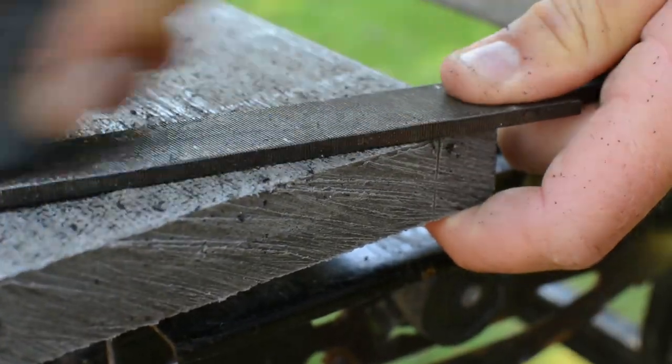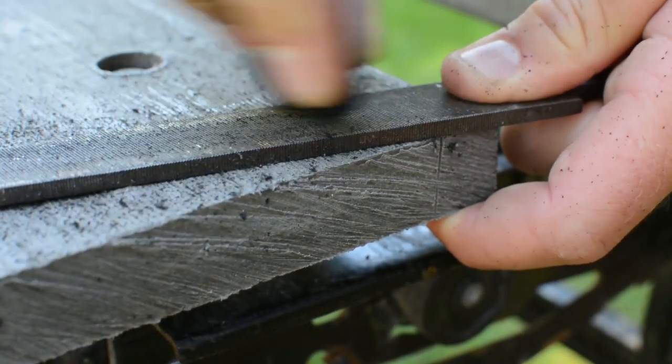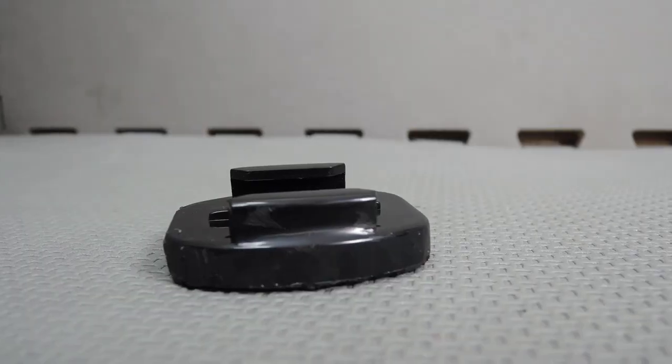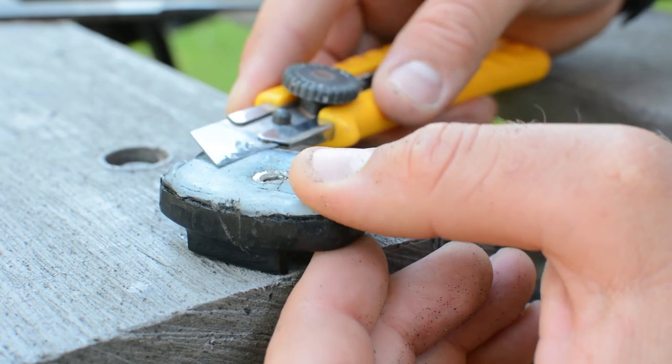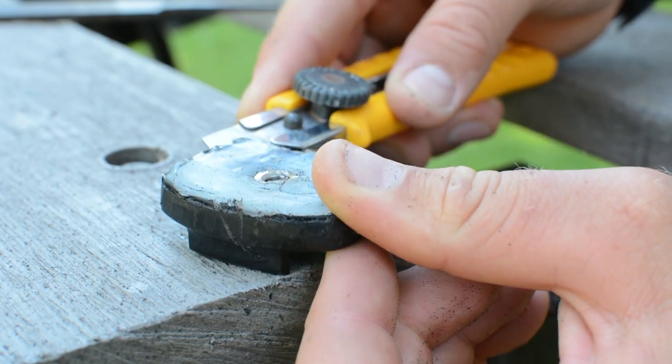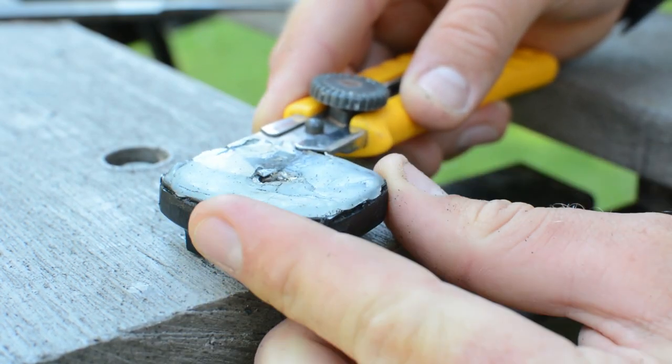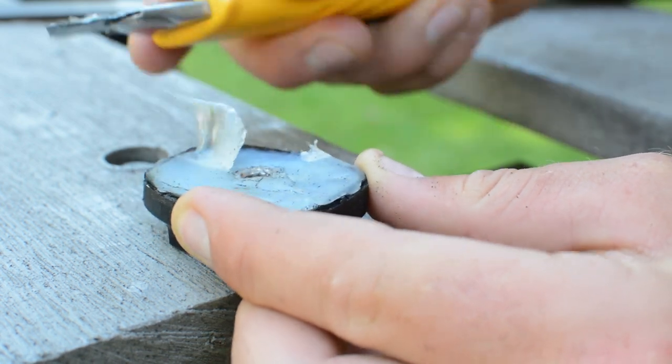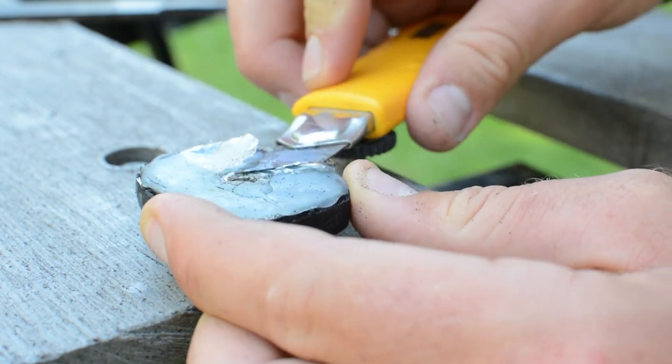Once that's done, we can grab our file and just kind of smooth out that edge so it looks really nice, smooth and professional. And then finally, if there's any trimming that needs to be done with excess glue around the mount, we can use a nice sharp exacto knife to finish that off.